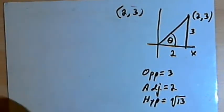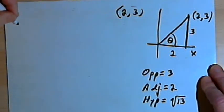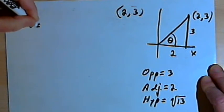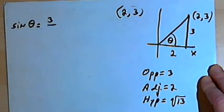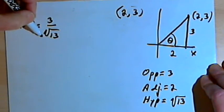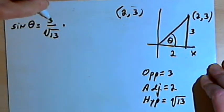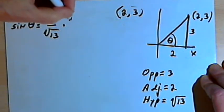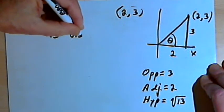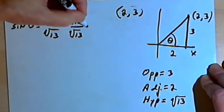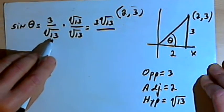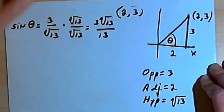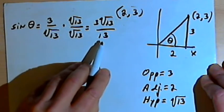With those two sides and the hypotenuse, I can now find trigonometric function values. If I want to find the sine of theta, I take the opposite side, which is 3, over the hypotenuse, which is the square root of 13. Now, if you're told you're not supposed to leave radical signs in the denominator, you multiply by the square root of 13 over the square root of 13. That gives us 3 times the square root of 13 in the numerator, and 13 in the denominator. Now we've got sine of theta as a fraction without a radical sign in the denominator.